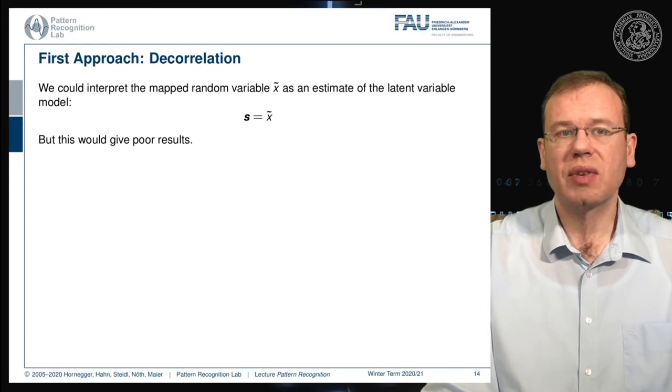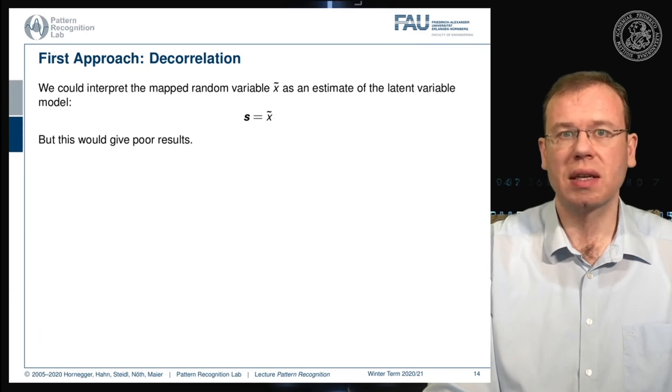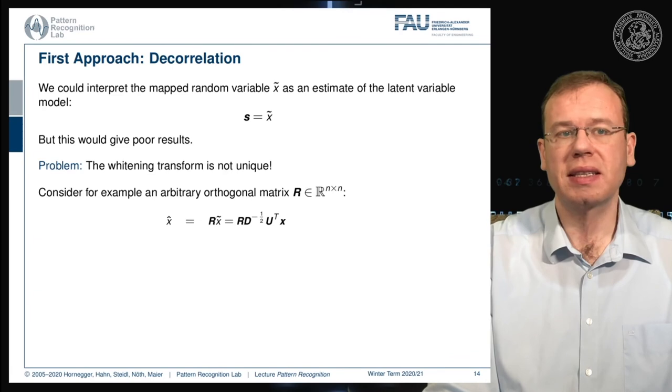So let's think about the first approach. So we could interpret the mapped random variable X tilde as an estimate of the latent variable model. And this would essentially then give us simply X tilde as the solution to the signals. But unfortunately, this gives us poor results. And the main problem is that this whitening transform is not unique.